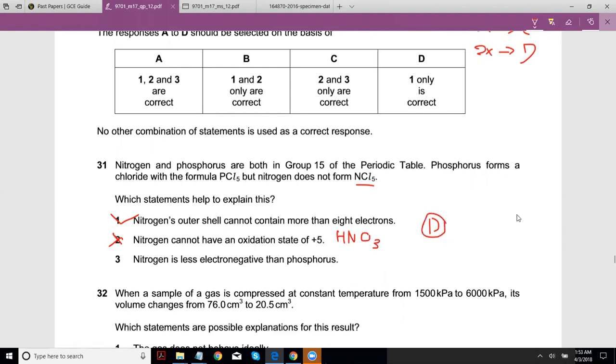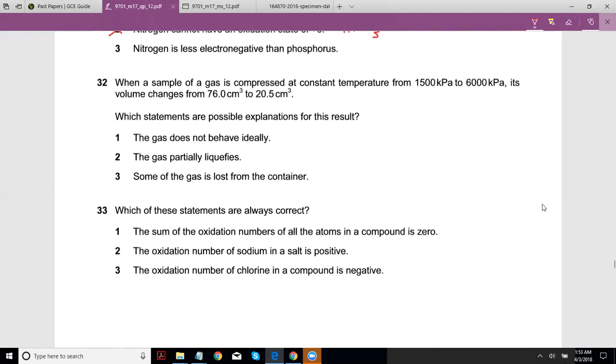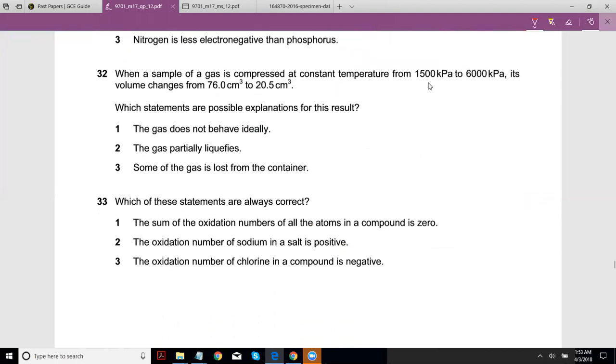When a sample of gas is compressed at constant temperature from this to this, its volume changes - which statements are possible explanations for this result? You know how PV equals P1V1 equals P2V2? If we calculate this, so if we take P1 to be 1500 kilopascals and multiply it by 76, and divide by 6000, the volume should actually be 19.